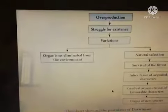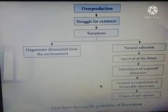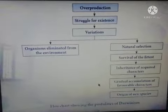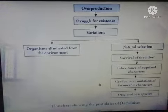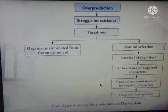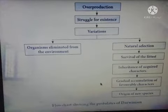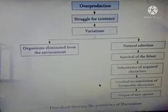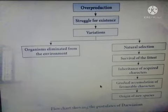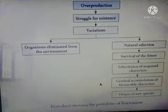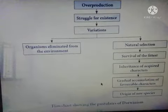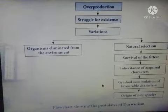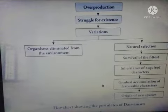Here it shows a flow chart showing the postulates of Darwinism. First, overproduction — when the population numbers increase, then among those species there is a struggle for existence for food and other purposes. Those organisms which dominate happen to live according to the environment. Variations show small differences among individuals. Organisms that are not favored for natural selection — or not able to survive in the particular environment — will be eliminated from that environment.